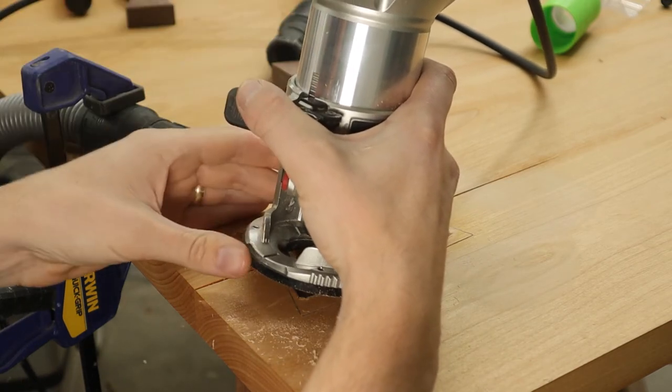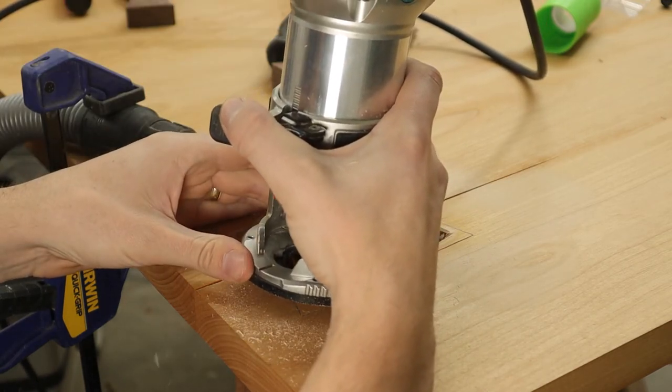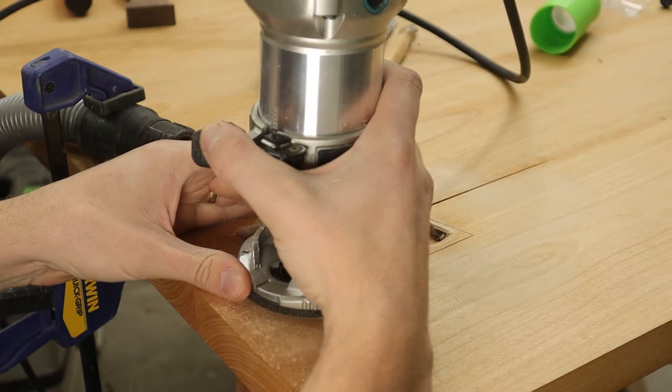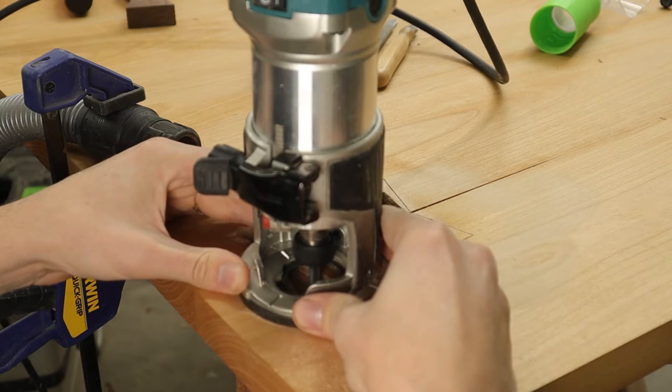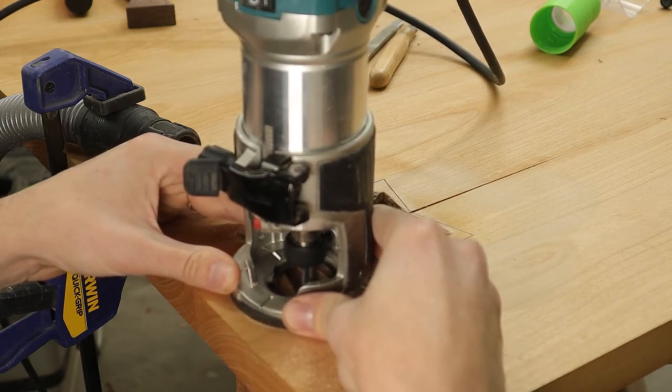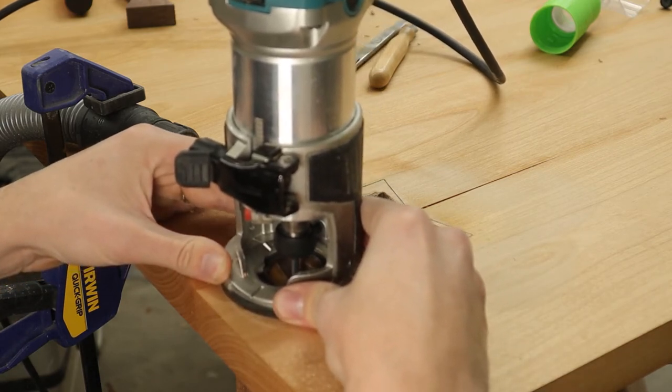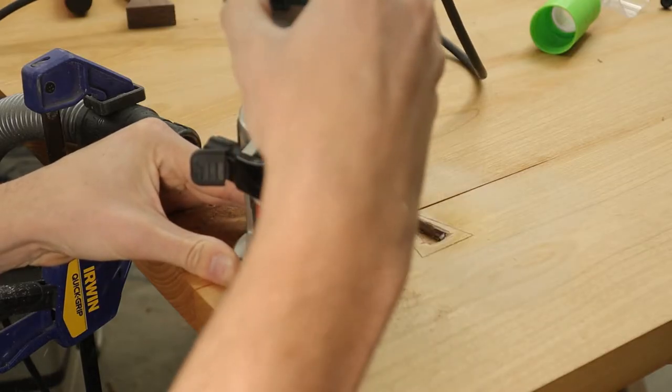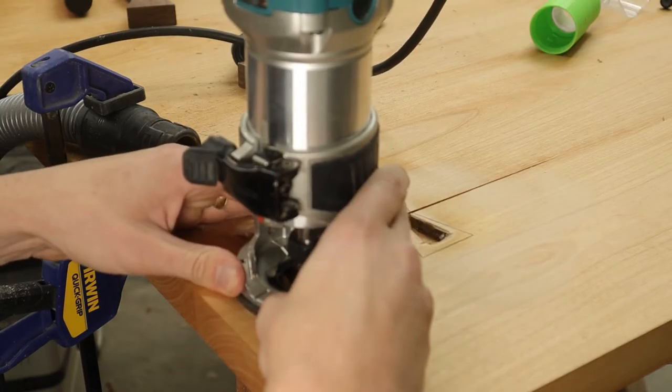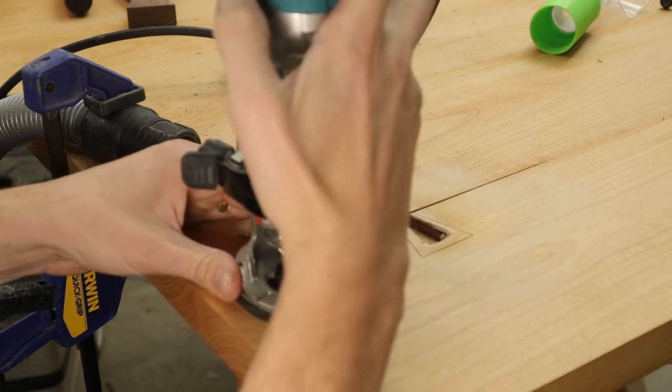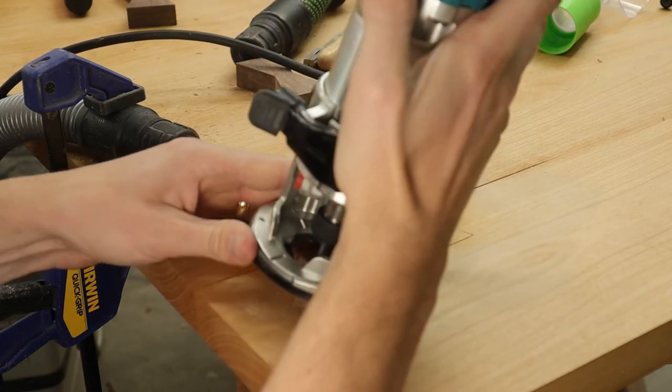So the key when routing out the waste is to take it nice and slow. I should probably have a bigger base so I can hold on to it better, but I'm sure it'll be fine. You just want to go nice and slow. All right, I had to check my pants after that one, but I think we're okay and let's keep routing.